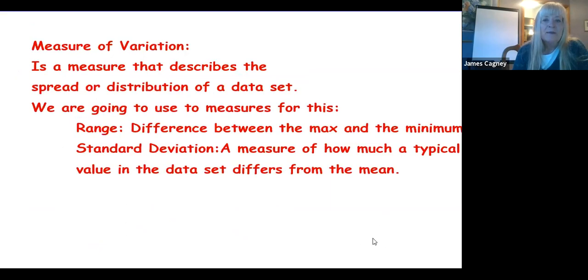We also talked about measures of variation. The measure of variation is a measure that describes the spread or distribution of a data set. The measures for this are going to be the range. The range is just the difference between the maximum and the minimum number. And the other measure of variation we're going to use is standard deviation. You had a separate video on how to find that.